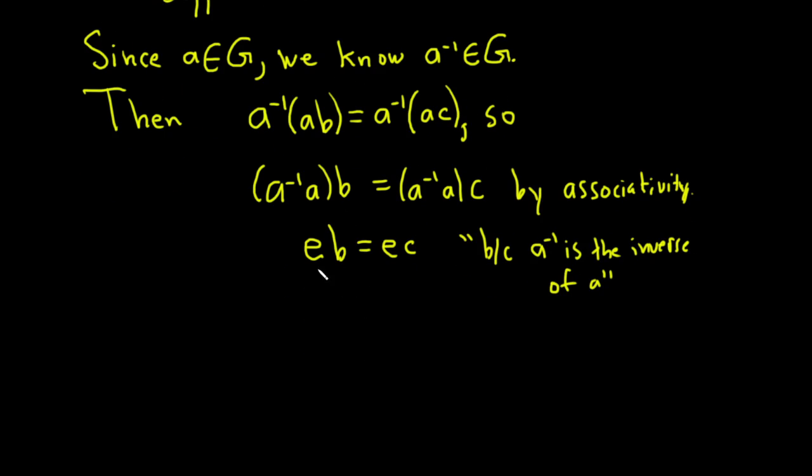And then because e is the identity, e times b is b. Likewise, e times c is c. And this is because e is the identity.